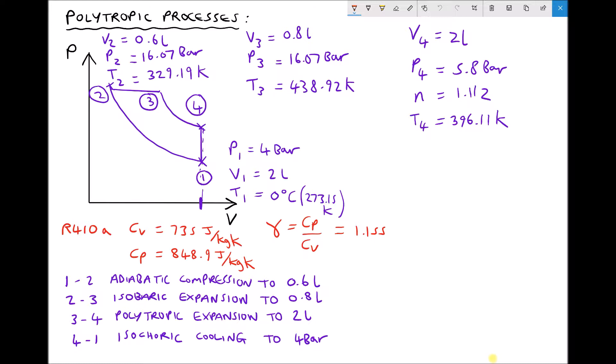Now if you haven't already watched that video, we started with conditions at position 1 with a pressure of 4 bar, a volume of 2 liters, and a temperature of 0 degrees C or 273.15 Kelvin, and we worked our way around the cycle based on a known volume V2, a known volume V3, and a known volume V4.